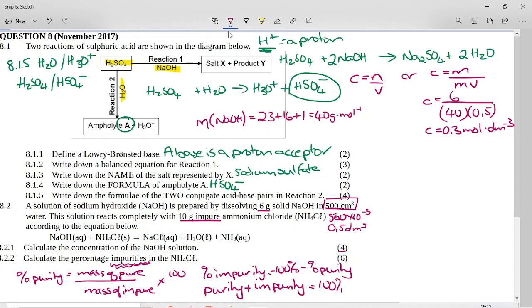Purity plus impurity is what's making up the whole sample, which will be 100%. So if we can find the percentage purity, we can end up finding the percentage impurity simply by subtracting from 100.